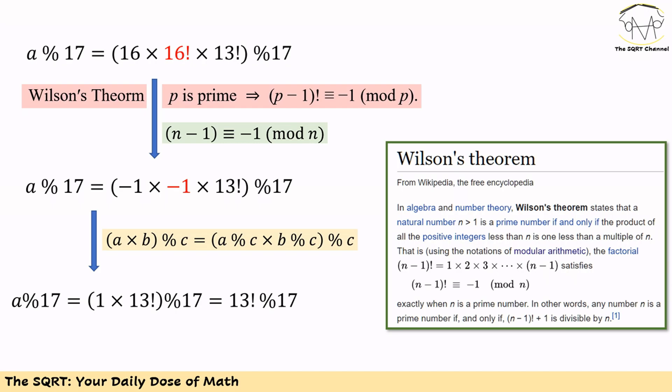We can write −1 times −1 as 1 in mod 17. Therefore a mod 17 equals 13 factorial mod 17.